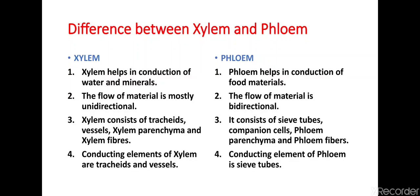Last but not least, the conducting elements of xylem are tracheids and vessels, whereas in phloem the conducting element is sieve tubes — only sieve tubes in the phloem help in the transportation of food material from leaves to different parts of the body. So this is all about plant tissues and their types. Next, we will be discussing animal tissues in the next PPT. Thank you.